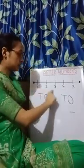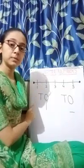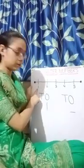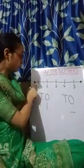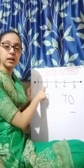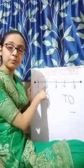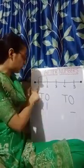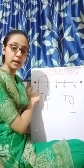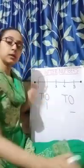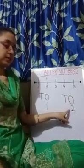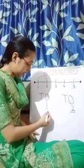Children, you can see there is a number line. Now let's find out which number comes after 1. You can see the number 1 written over here. Now if we move a step forward, which number did we reach? We reached the number 2. So that means the number that comes after 1 is 2. So let us write the number 2 in the blank. The number that comes after 1 is 2.